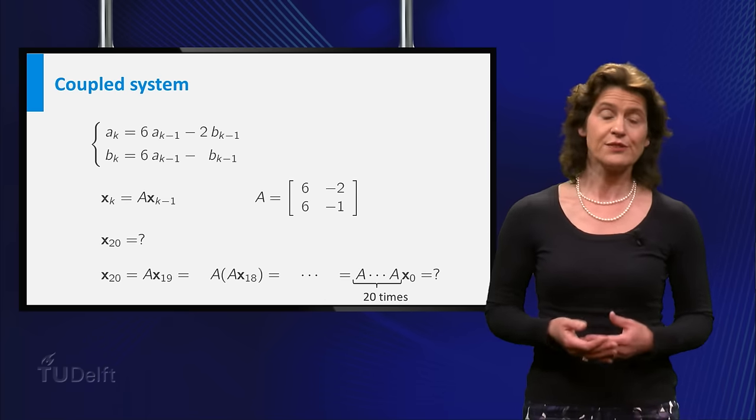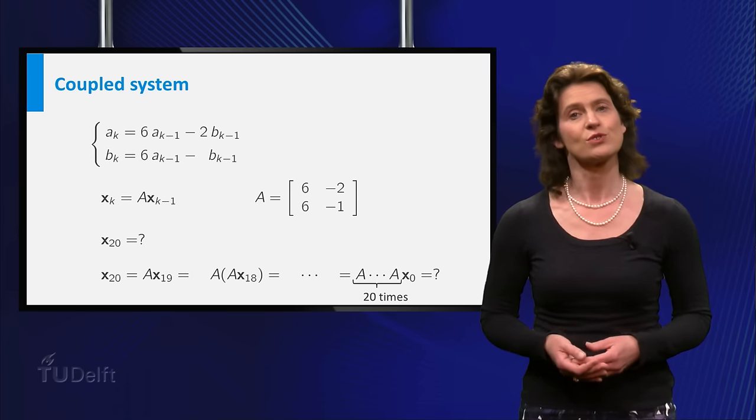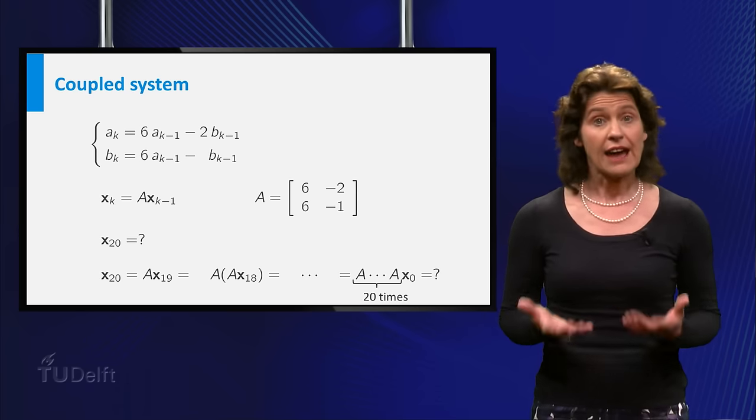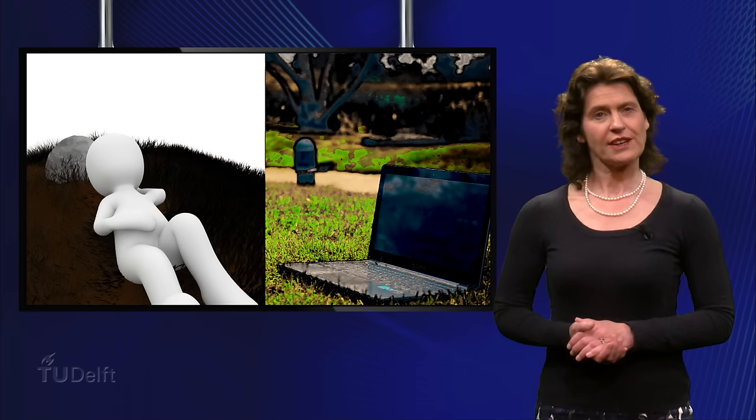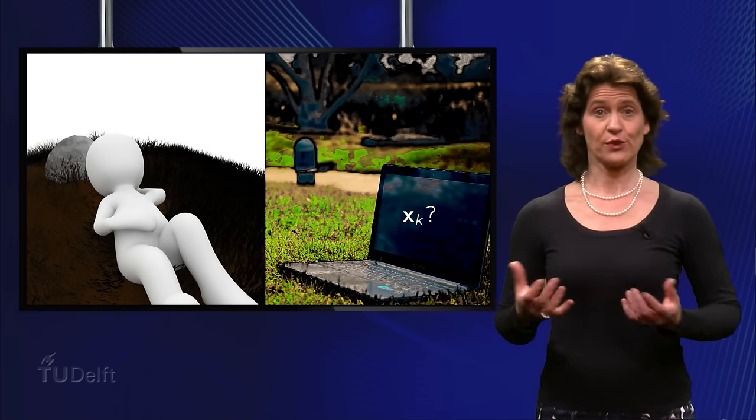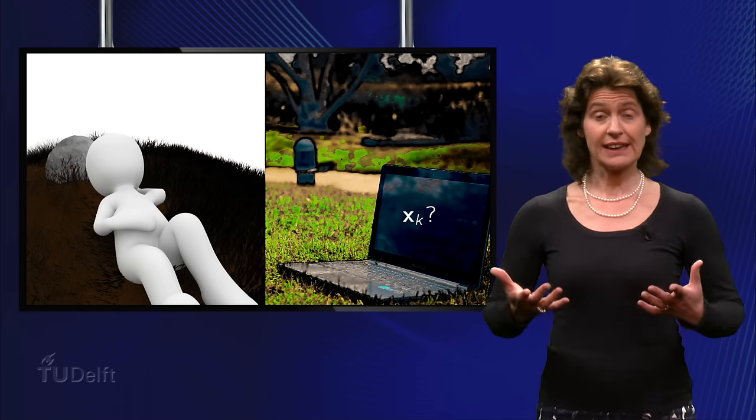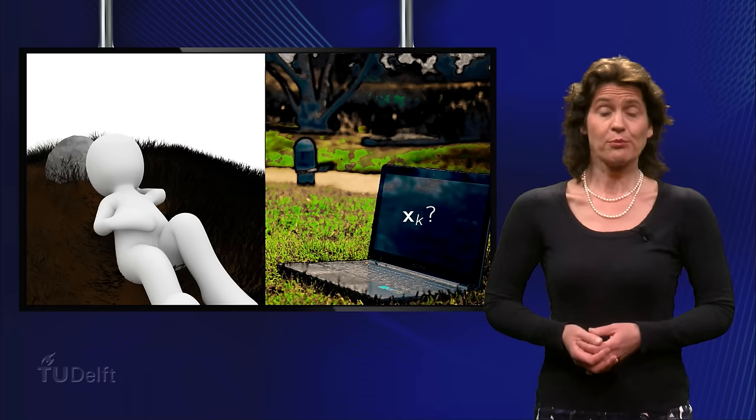Why is this harder than in the previous example? Well, in the previous example, the matrix you used was a diagonal matrix and now it is not. Being a mathematician, I am quite lazy. So normally I would let a computer do the computations for me. But what if I want to find a general formula for xk without specifying k? Then the computer cannot help me either.